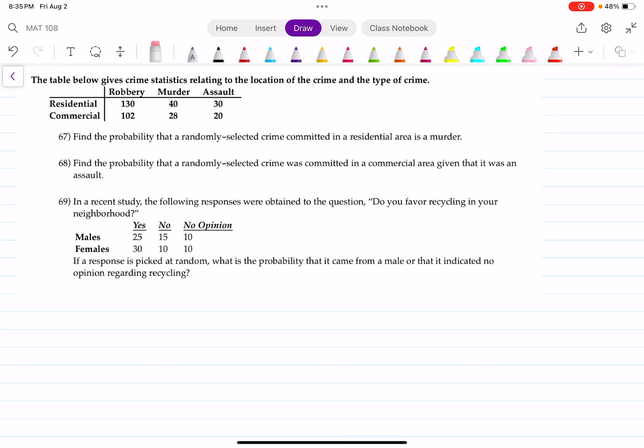The table below gives crime statistics relating to the location of the crime and the type of crime. So you have robbery, murder, and assault, and you have residential and commercial areas.